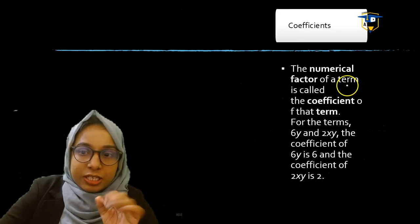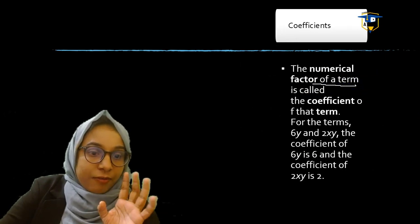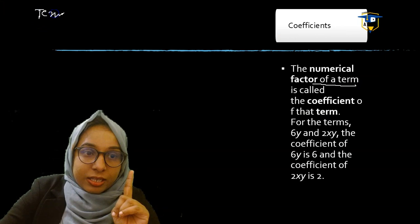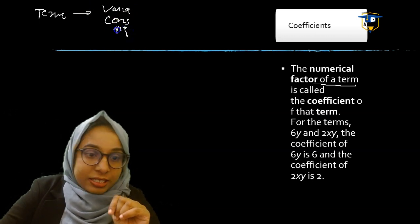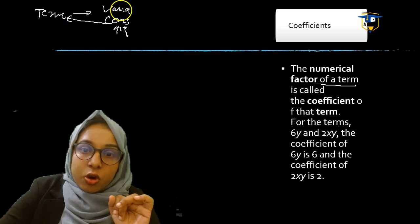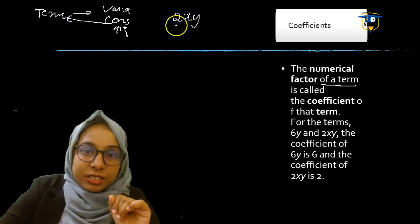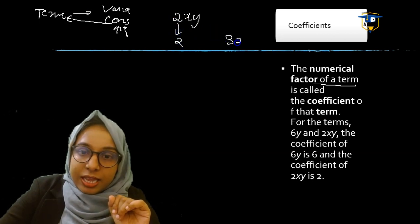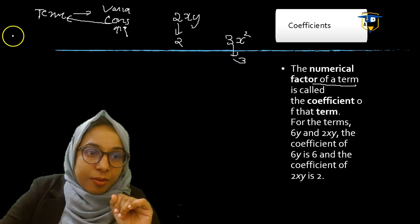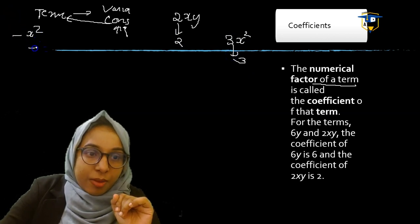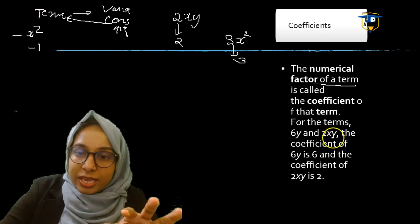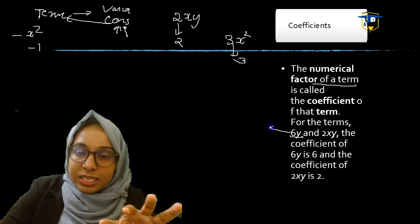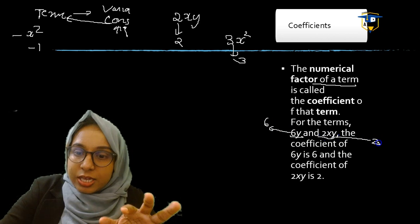Next is coefficient. The numerical factor of a term is called the coefficient. We already know terms contain variable factors and constant factors. This numerical factor is called the coefficient. For example, in 2xy the coefficient is 2. In 3x squared the coefficient is 3. In minus x squared the coefficient is minus 1. Coefficient of 6y is 6, and coefficient of 2xy is 2.